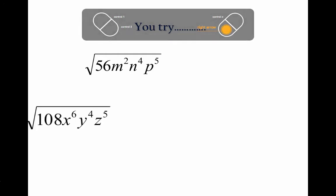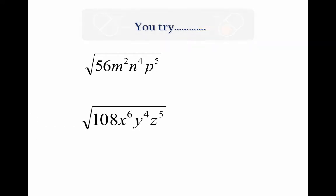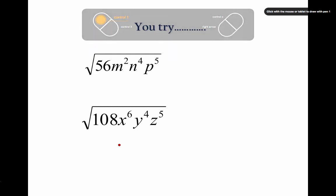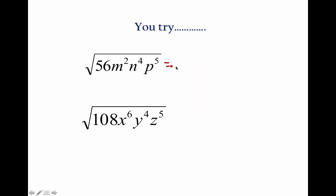You try. Here we go. 56. Perfect square factor of 56. What goes into 56? Is it 14 times 4? We did that one already. 4, 14. M squared. N to the 4th. I got to change the P to the 5th. This is P to the 5th. 4 of them and 1 of them is 5 of them. Now I take them apart.